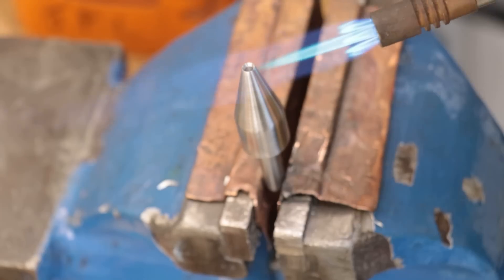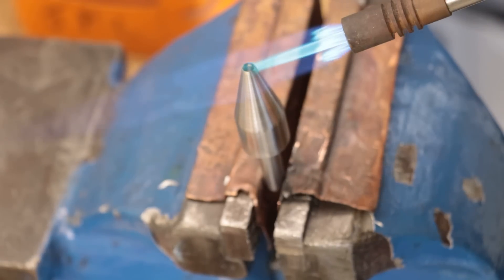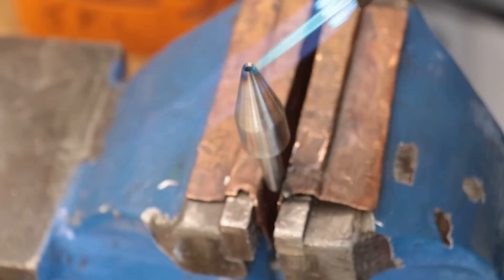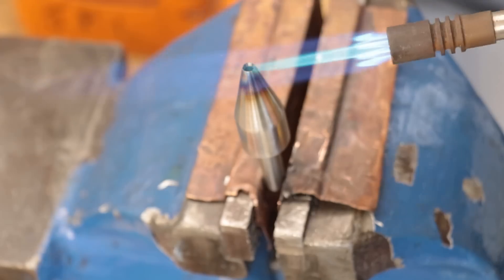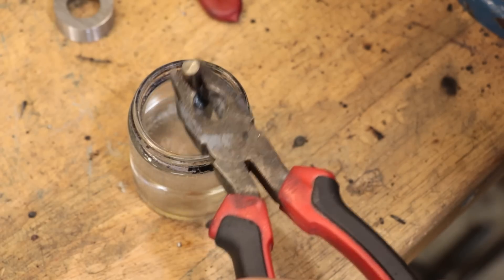I can now harden the very tip of the cone by heating it up and then quenching it in water. I only need the end 5mm or so hardened and the rest of it can stay soft.